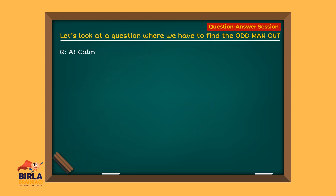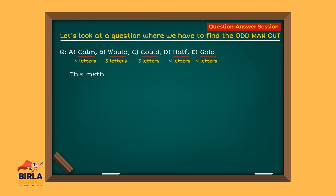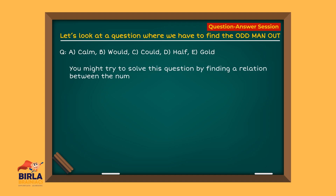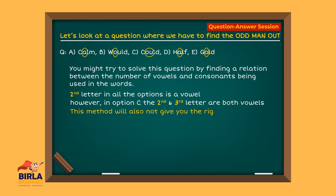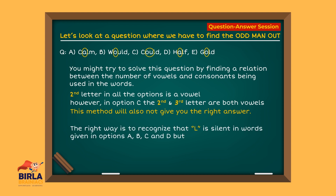Let's look at a question where we have to find the odd man out. You may try to find logic in the number of letters in each word — options A, D, and E have 4 letters while B and C have 5 letters, but this method would be wrong. You might try to solve by finding a relation between vowels and consonants, but this also won't give the right answer. The right way is to recognize that L is silent in the words in options A, B, C, and D, but not in option E. Therefore, option E is the odd man out.